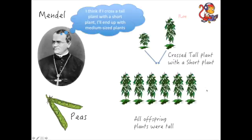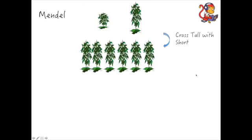But he didn't stop there. He then took two of these tall plants that he'd made and crossed them together. So this is the first step he did: crossed the short plant with a tall plant and found all of these offspring were tall.